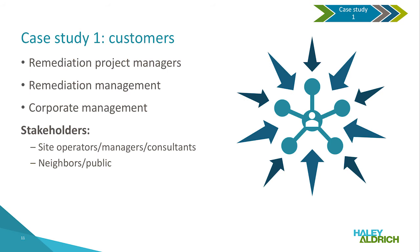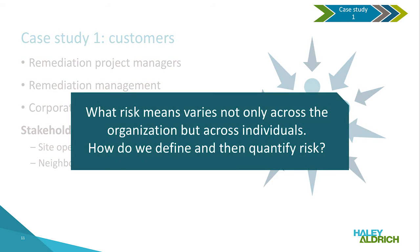When applying lean, we always first start with understanding who the customers of a process are — typically those directly paying for and/or benefiting from the work being conducted. We seek to understand together what is important to them, what they value. In this example, the managers of the individual remediation projects, their client management team, and corporate are the customers of the work. The team also identified stakeholders, including site operators, their consultants, and the surrounding community. This is a diverse group who will have different priorities driving what is important to them.